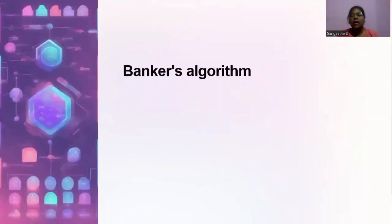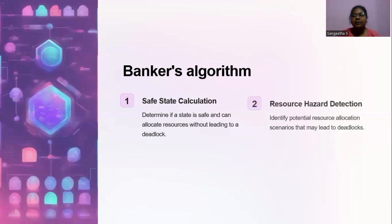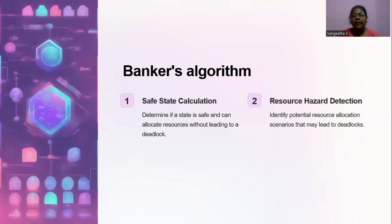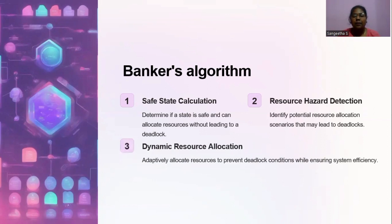Banker's Algorithm is an algorithm introduced to avoid deadlock. Safe state calculation: in the Banker's Algorithm we calculate the safe state — which process should proceed first and which proceeds next. Determine if a state is safe and can allocate resources without leading to a deadlock. Resource hazard detection: identify potential resource allocation scenarios that may lead to deadlocks. Dynamic resource allocation: adaptively allocate resources to prevent deadlock conditions while ensuring system efficiency.